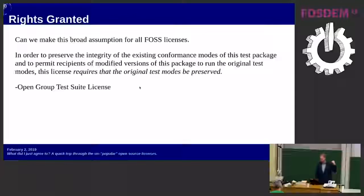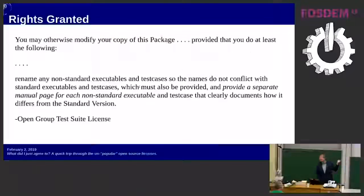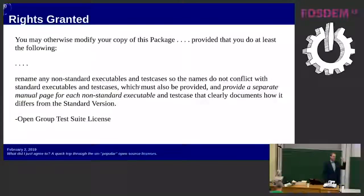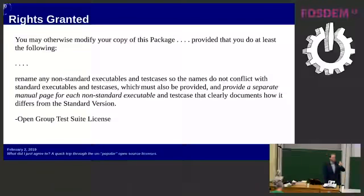Other licenses are a little more complex. The Open Group Test Suite license says you can modify it, but you have to keep the original test modes preserved — you can make modifications but you have to leave the existing stuff in place. They're really specific: executables from your modifications must have a different name, because you have to leave the originals under their original executable names. And on top of that, you're required to write documentation. Here's a license that says you're violating the open source terms if you don't write documentation.